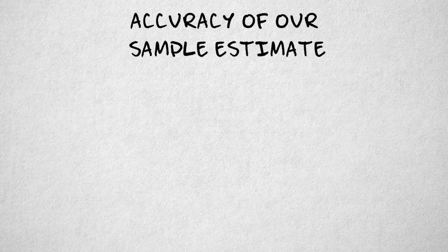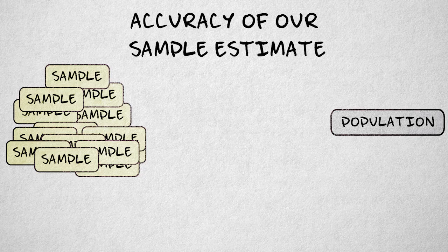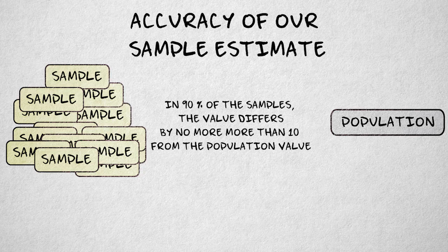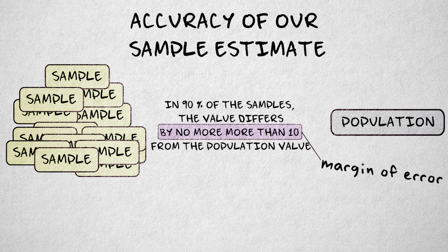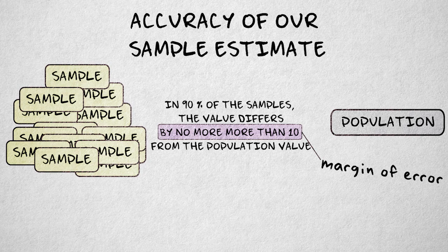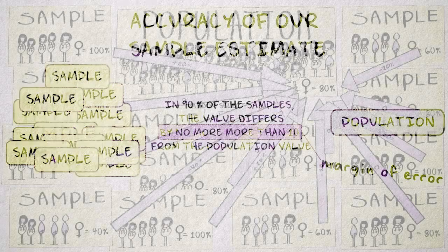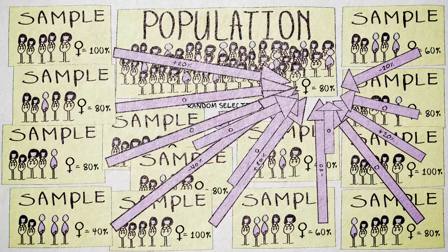Probability sampling allows us to determine that with repeated sampling, in a certain percent of the samples, the sample value will differ from the real population value by no more than a certain margin of error. This sounds and is complicated, but it basically means that we can judge how accurate our sample estimate is in the long run.